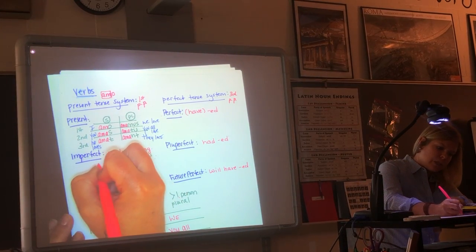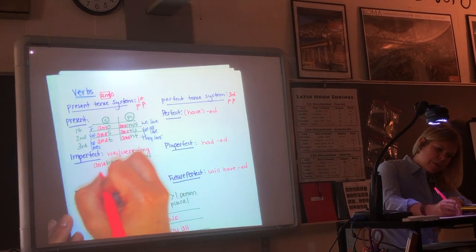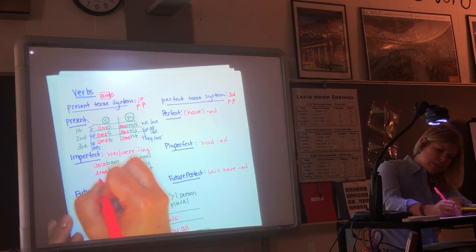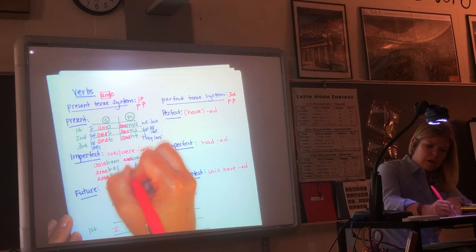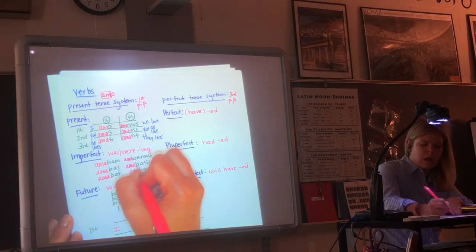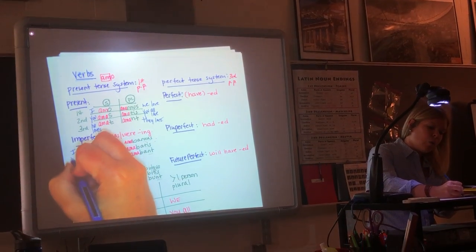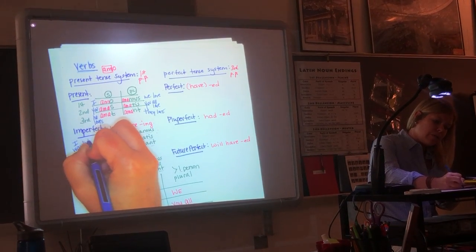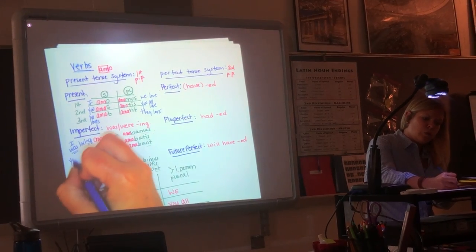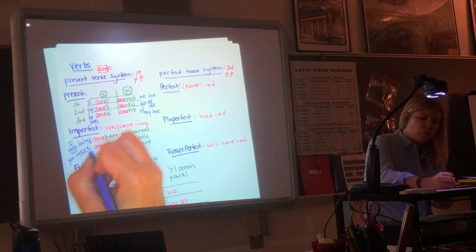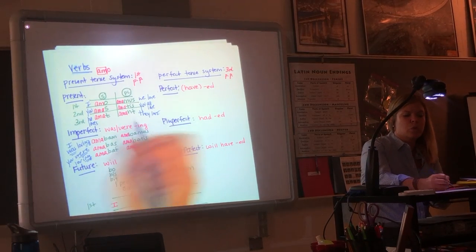Imperfect. Same thing. We're still using that same stem. Amabam, amabas, amabat, amabamus, amabatis, amabant. So now it's I was loving. Do you see the was and the -ing? You were loving. That's why it says was or were -ing.